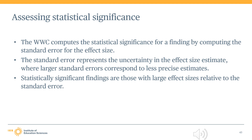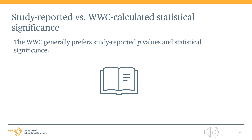Statistically significant findings are those where the WWC observes a large effect size relative to its standard error. In addition to reporting their own effect sizes, study authors can report on the determination of statistical significance. The WWC generally prefers study-reported statistical significance unless the study authors fail to adjust for baseline differences or clustering when those adjustments are required. For some studies, the WWC may also need to combine multiple findings into a composite finding at the outcome domain level, and then determine the effect size and statistical significance of that WWC-constructed composite.